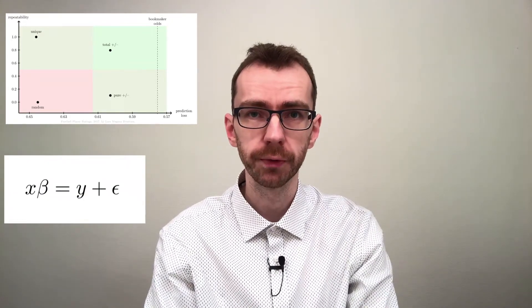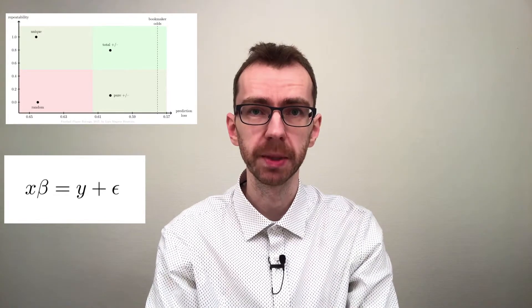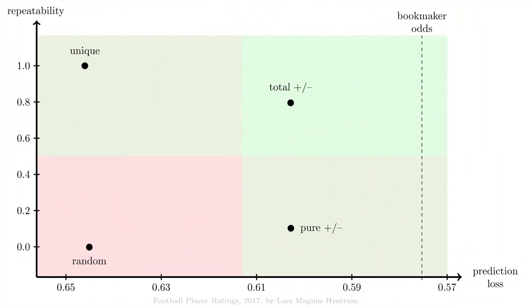The third rating that we looked at was the adjusted plus minus rating, where we used linear regression to find ratings that fit best with the observed goal differences in each segment of a match. As we observed from the top 10 list associated to this rating, the results were rather erratic, and our measurements confirmed this. We are doing almost as bad as if we were just drawing random ratings.